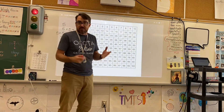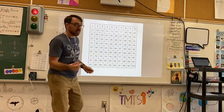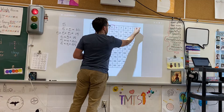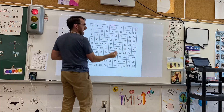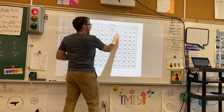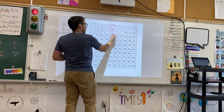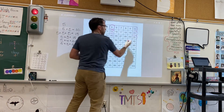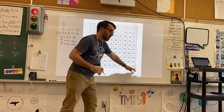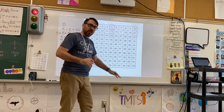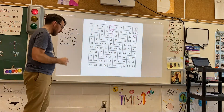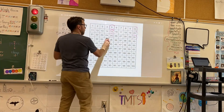One way we can find multiples is using a hundreds chart like this. For my fives, for example: there's five, I add five more — one, two, three, four, five — I have ten. I add five more — one, two, three, four, five — I have 15. I begin to see a pattern emerging. I can list my multiples of five up to a hundred on my hundreds chart, going back and forth like that.